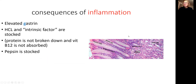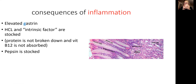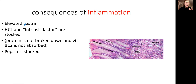The consequences of inflammation on the surface of the stomach are significant. Gastrin becomes elevated. Hydrochloric acid and intrinsic factor get locked inside the stomach and cannot come into the lumen. As a result, the purpose of hydrochloric acid — to break protein into individual amino acids — is not happening. Protein is not broken down, and nutrients such as calcium, magnesium, and B12 are not released. So B12 is not absorbed, and pepsin is also blocked.